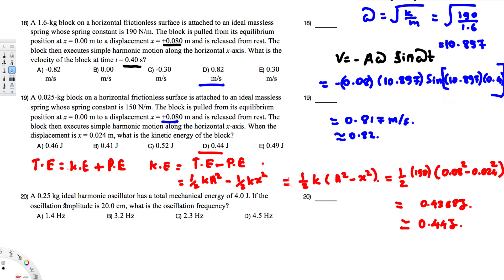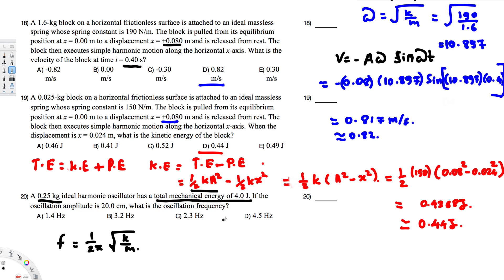Next question: a 0.25 kilogram harmonic oscillator has a total mechanical energy of 4 joules. If the oscillation amplitude is 20 centimeters, what is the oscillation frequency? The frequency equation is f = (1/2π)√(k/m). We have the mass, but we don't have the spring constant. To find k, we use the total energy equation: total energy = ½kA².